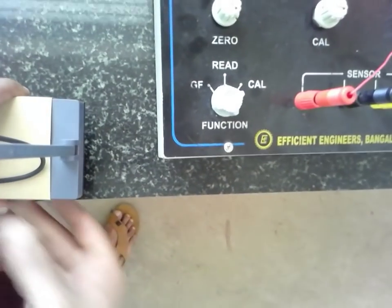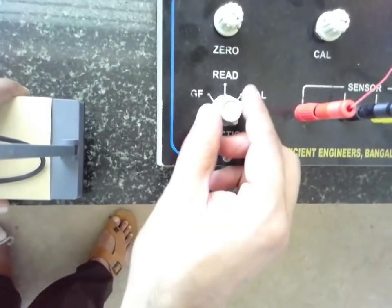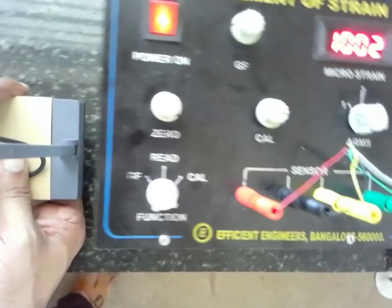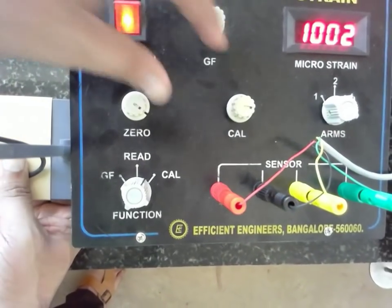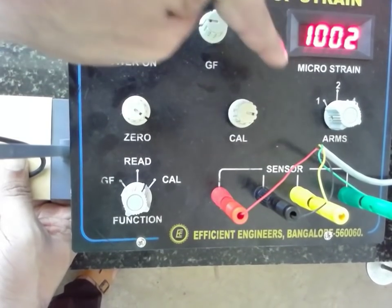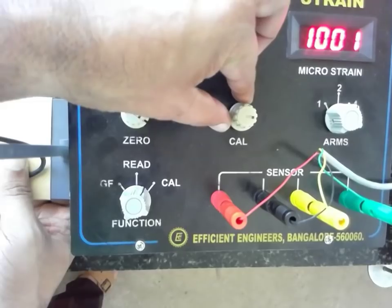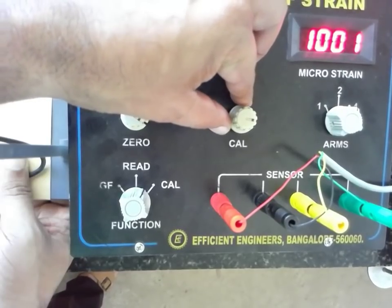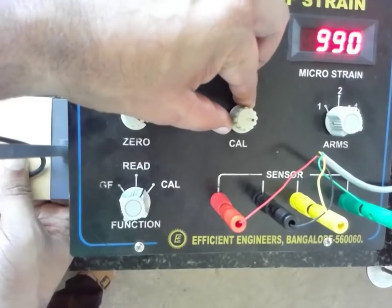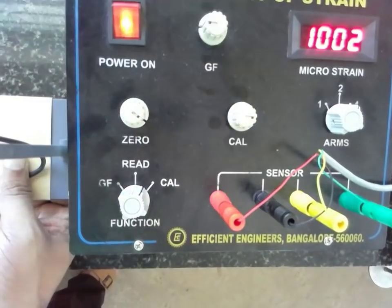Find it. Again come back to the cal knob. Rotate to the cal knob. Make the cal knob to one thousand. It is already one thousand. Let it be one thousand here.